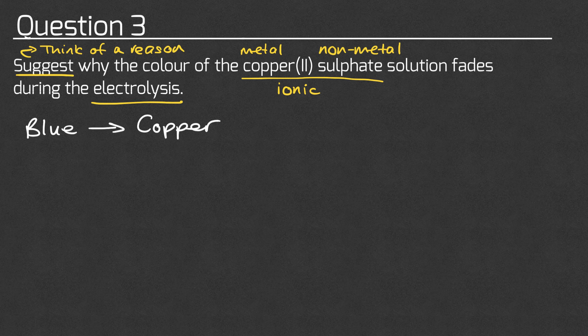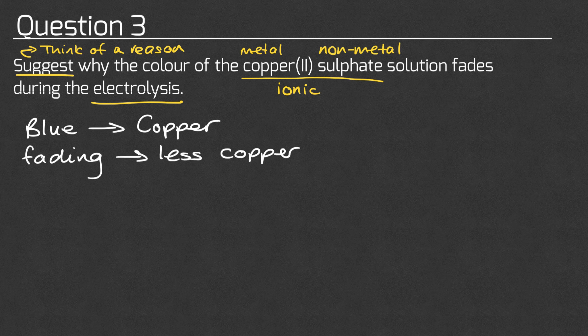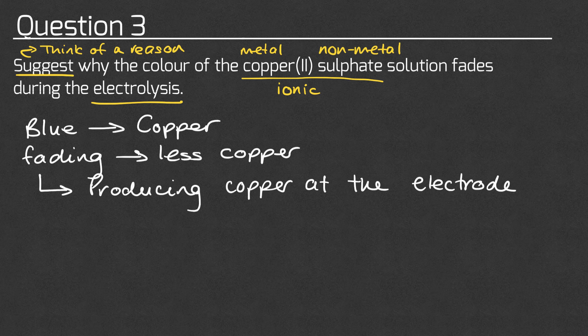We need to know that the colour of this solution comes from the copper — from the metal ions. Quite typically in compounds like this, the metal ion is the one which gives it its colour. Therefore, if the question tells us the solution is fading in colour, this means there must be less copper in the solution. Because if the copper gives us its colour and the colour's fading, it makes sense that there's less copper.